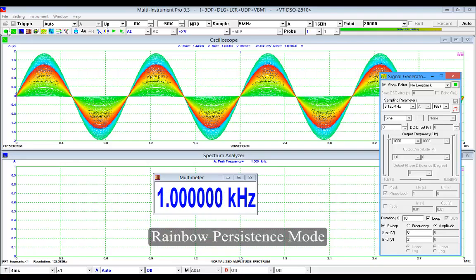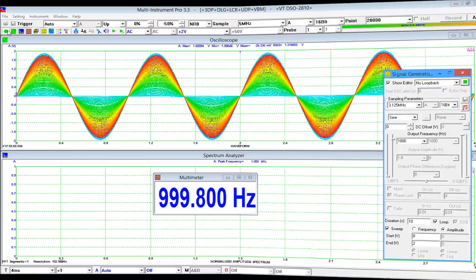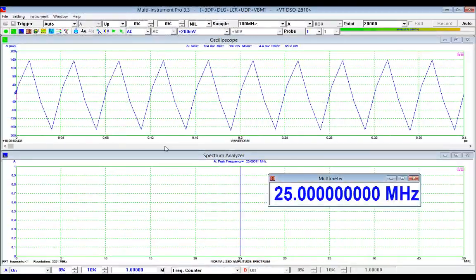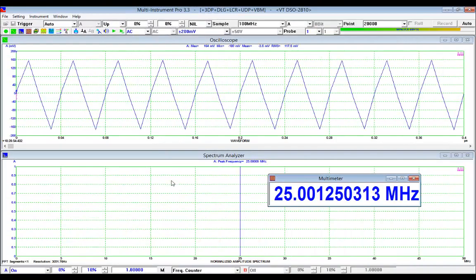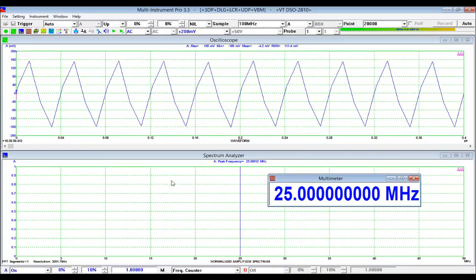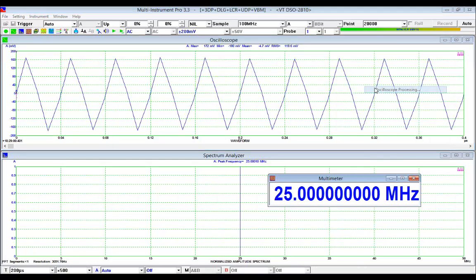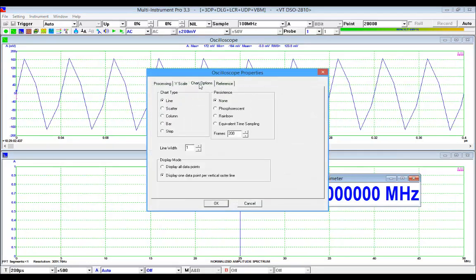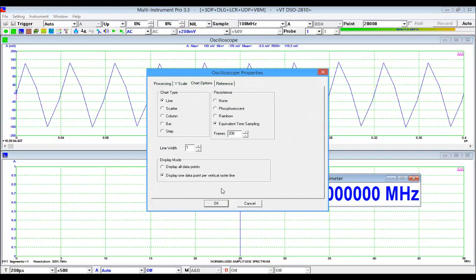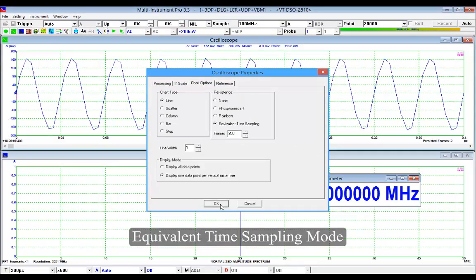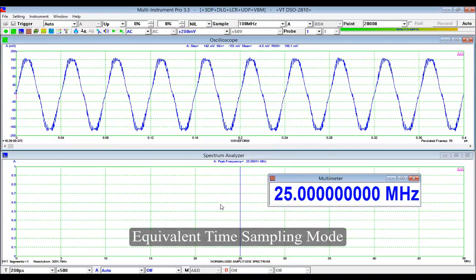Now we demonstrate the equivalent time sampling function. The input signal is a sine wave at 25 MHz. The sampling rate of the oscilloscope is 100 MHz, therefore only 4 samples per cycle. Now we change it to equivalent time sampling mode. As you can see, the waveform looks better.